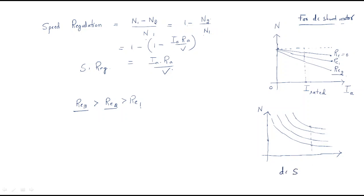For the DC series motor, consider the same thing: if external resistance is zero, if external resistance is one ohm, if external resistance is two ohms, and external resistance is three ohms — then the relation between armature current and speed is like this. For the DC series motor, speed varies in a hyperbolic pattern.